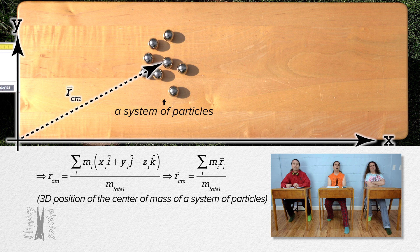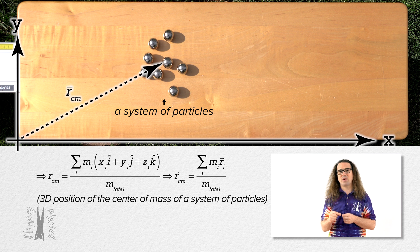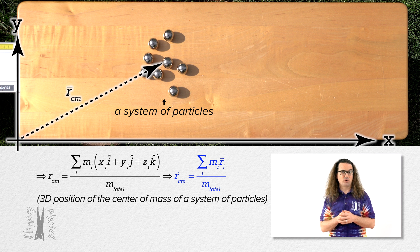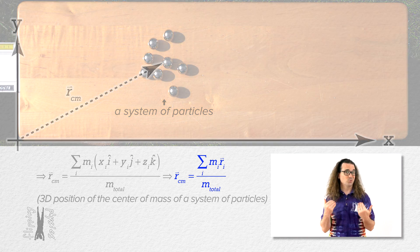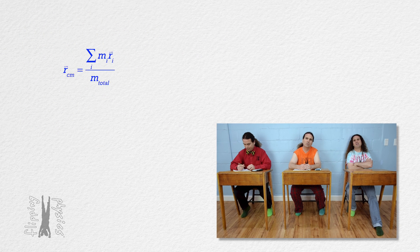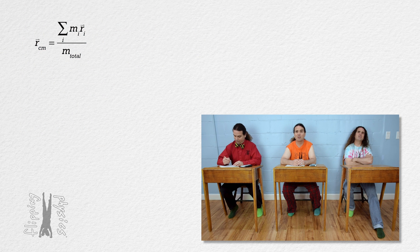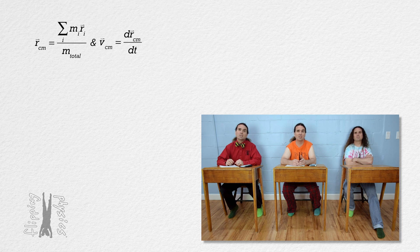I guess I get that, but why does it matter? It matters because we can now do a heck of a lot more by using this r position of the center of mass of a system of particles equation. For example, please work through what we get when we take the derivative of this equation with respect to time. Well, the derivative of position with respect to time equals velocity, so the derivative of the r position of the center of mass of a system of particles must equal the velocity of the center of mass of a system of particles.